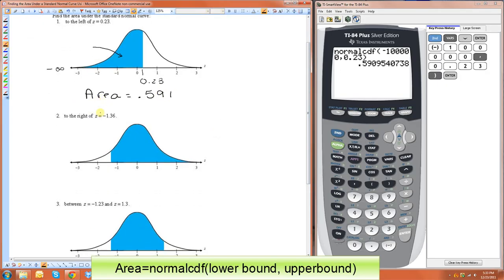On this one, we want to find the area to the right of z equals negative 1.36. So this is negative 1.36, and then all the way over here, our upper bound is going to be positive infinity.